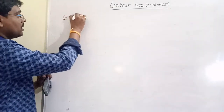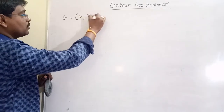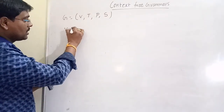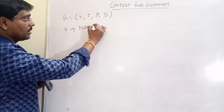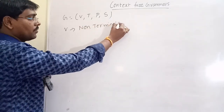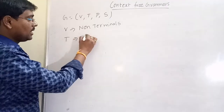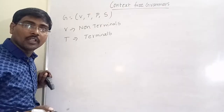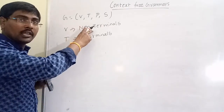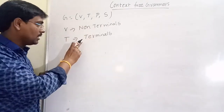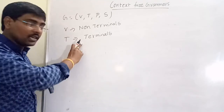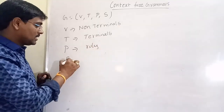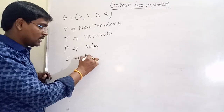A grammar is represented in the format of four tuples: V, T, P, S — where V is the set of non-terminals, T is the set of terminals, P is the production rules, and S is the start symbol. Generally, non-terminals are represented in uppercase letters and terminals are represented in lowercase letters.